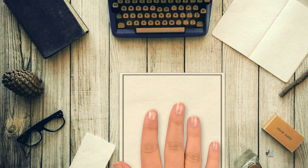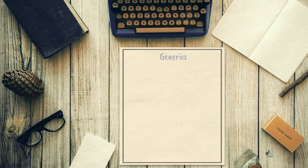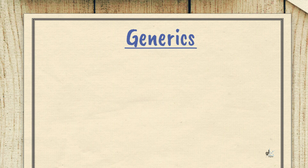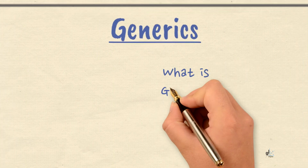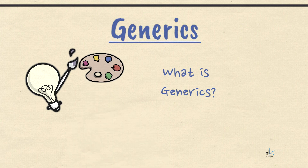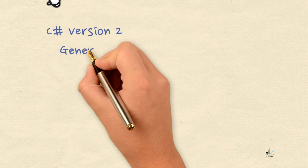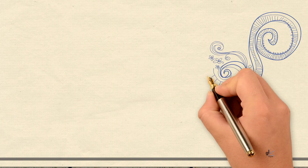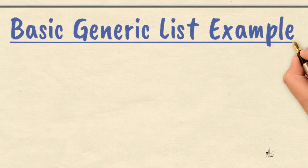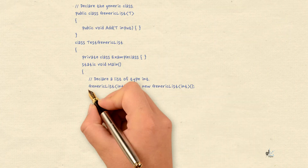Before we dive into this topic we must have at least a basic understanding of generics. Generics is a topic we'll explore in detail in upcoming videos, but for now a basic understanding will suffice. In C# version 2, generics was introduced. Generics makes it possible to design classes, methods, and delegates that defer the specification of one or more types until the class, method, or delegate is declared and instantiated by client code.